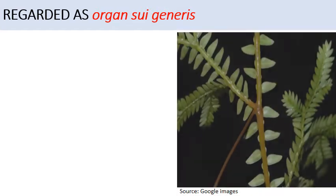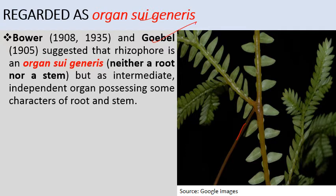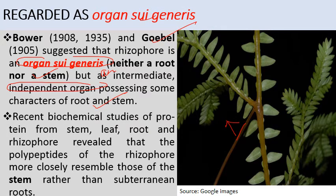Some scientists regard the rhizophore as an organ sui generis — neither root nor shoot. Bower and Gobel suggested that rhizophore is an organ sui generis: an intermediate independent organ possessing some characters of both root and stem. Recent biochemical studies of proteins from stem, leaves, root, and rhizophore revealed that the polypeptides of rhizophore more closely resemble those of the stem rather than subterranean roots.